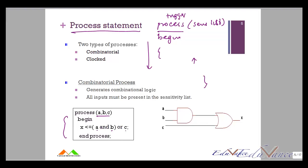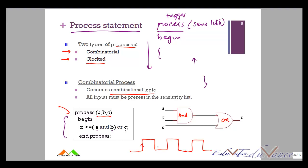In processes there are two types: combinatorial and clocked. A combinatorial process generates combinational logic — for example, process with A, B, C in the sensitivity list, where X is assigned A and B or C. The clocked process is used when I have a signal that periodically changes with a rising edge or a falling edge. So how do I specify that in VHDL?